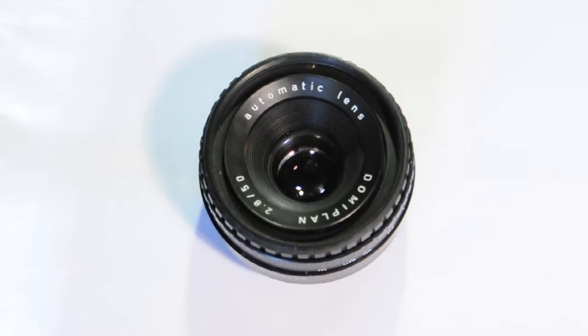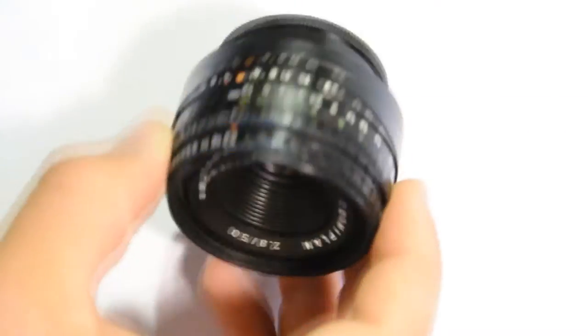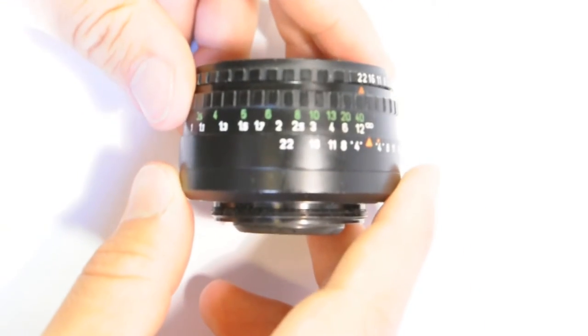Hello, today we are going to disassemble the Domiplan 2.8 50mm automatic lens. It's a fairly cheap and versatile 50mm lens for analog cameras.